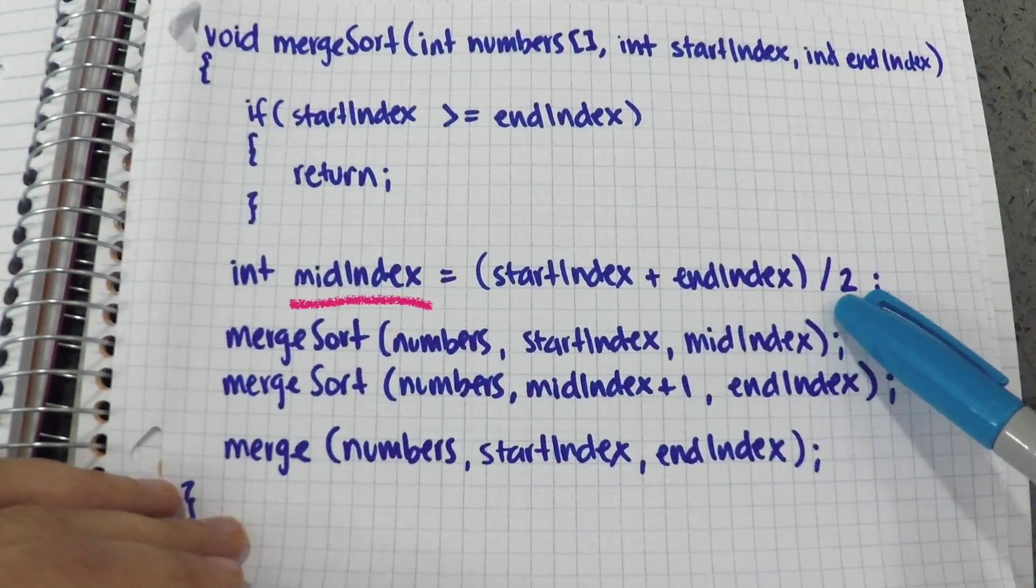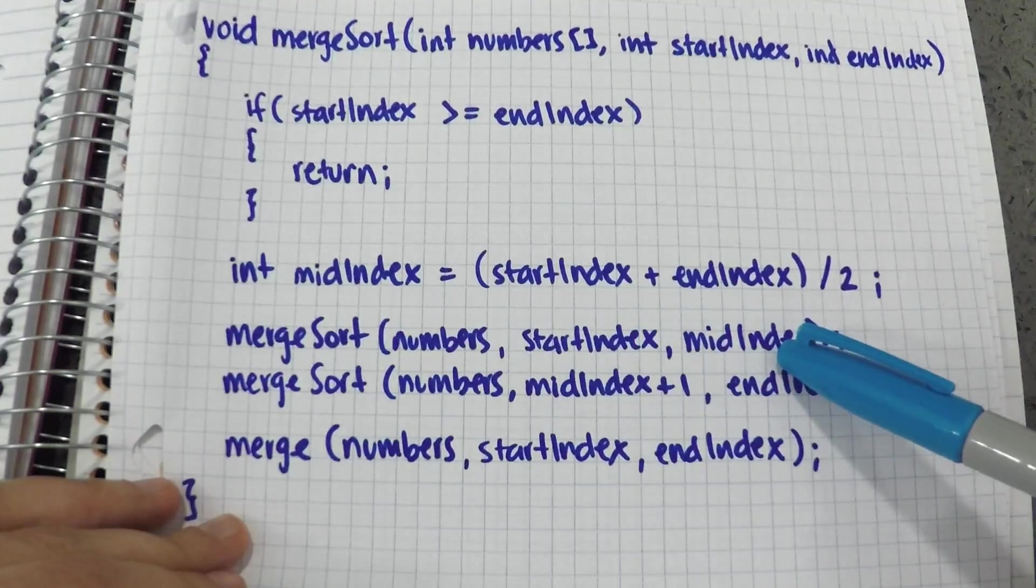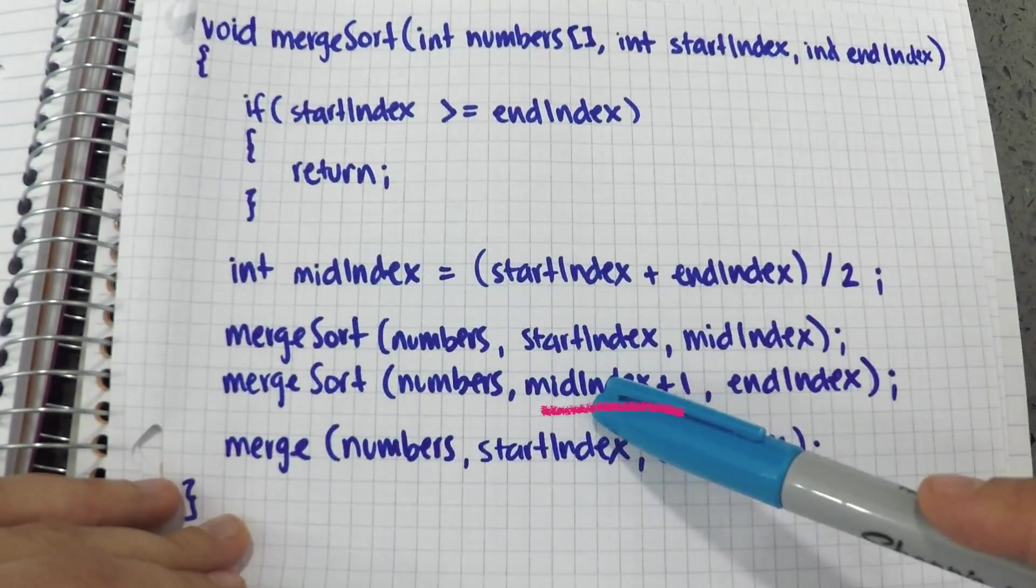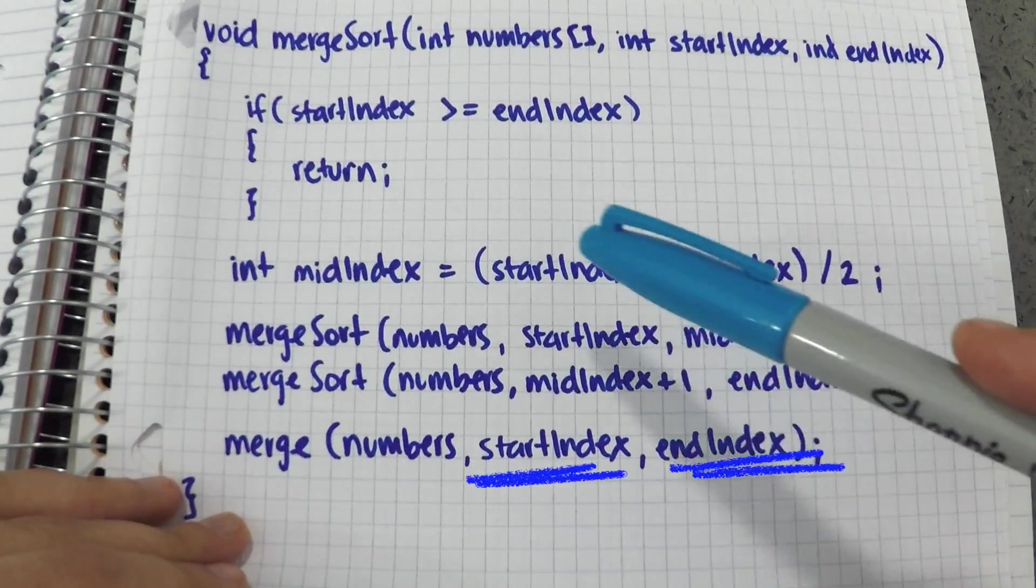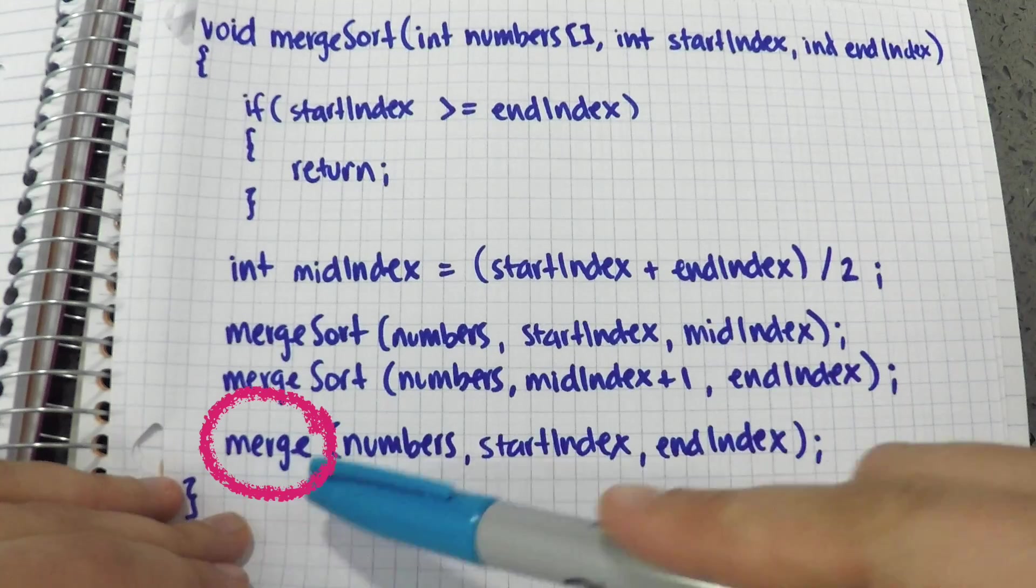Then, I start making the recursive calls to divide the array in half. In the first call, I pass a mid-index as an end. In the second call, I pass a mid-index as a start. Every time I make these calls, the start and end indices change, and I pass this to the Merge function to sort and merge the subarrays.